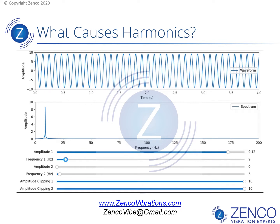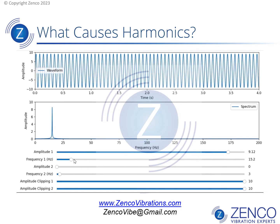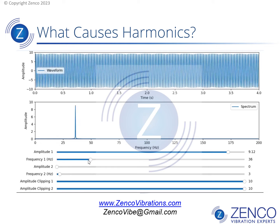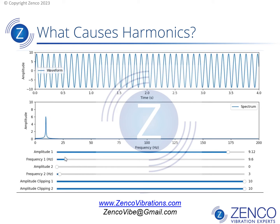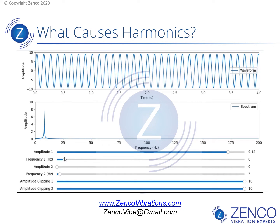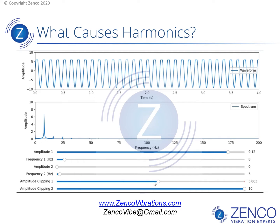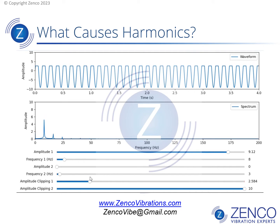What causes harmonics? At the top we have a time waveform. At the bottom the graph is called a spectrum, and this is changing the frequency of that vibration. You can see you get a single peak in the spectrum. Now I'm going to distort the top time waveform by clipping it, and you can see it's gotten flatter, and now in the spectrum what I see are harmonics, or multiples of the base frequency.